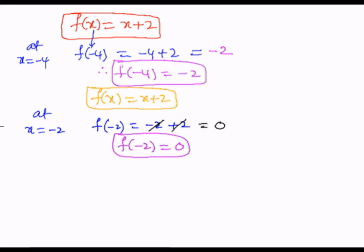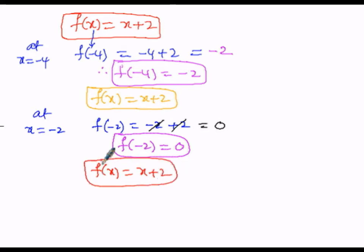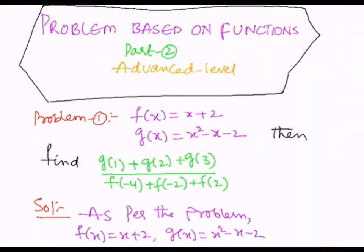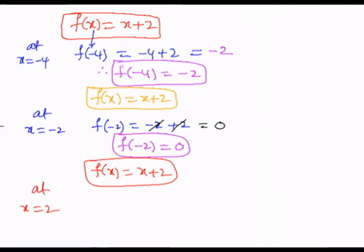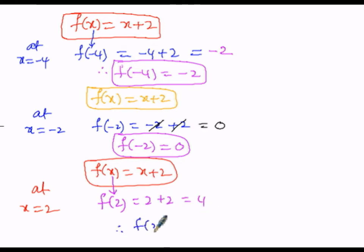For the third case, f(x) equals x plus 2. At x equals 2, x is replaced by 2, giving 2 plus 2, which equals 4. Therefore f(2) equals 4.